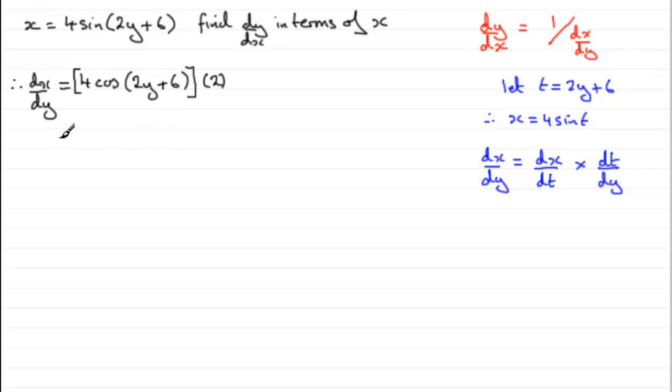And let's clean this up. What we've got now is 4 times 2, which is 8, 8 cos of 2y plus 6. Now, we haven't got this in terms of x yet. So how do we get round that problem?